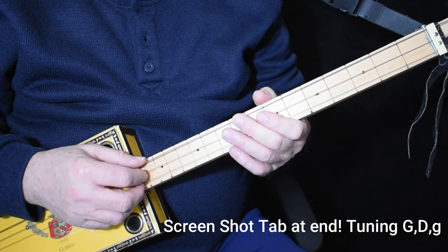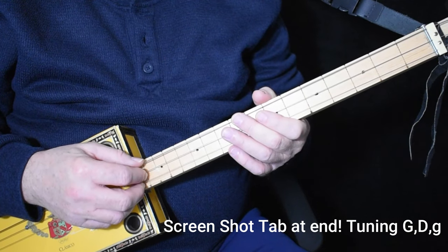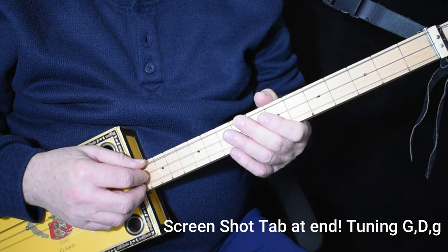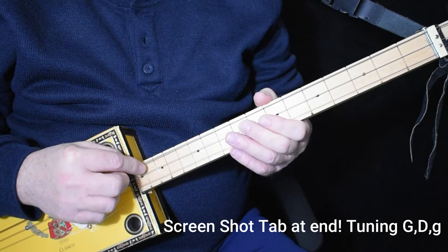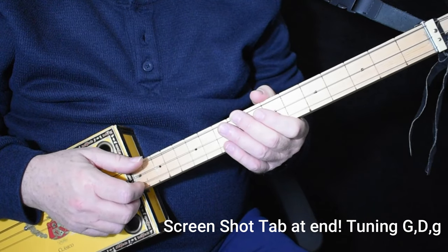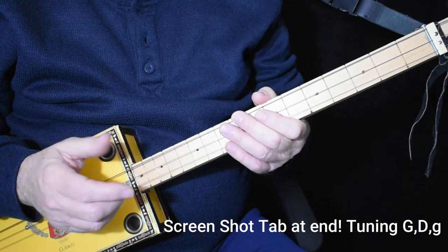Hi, today I'd like to teach you how to play Boom Boom, otherwise known as Boogie Chillin' by John Lee Hooker. I'm tuned to G, G, D, G. This song is actually an E, but it works out great for us.